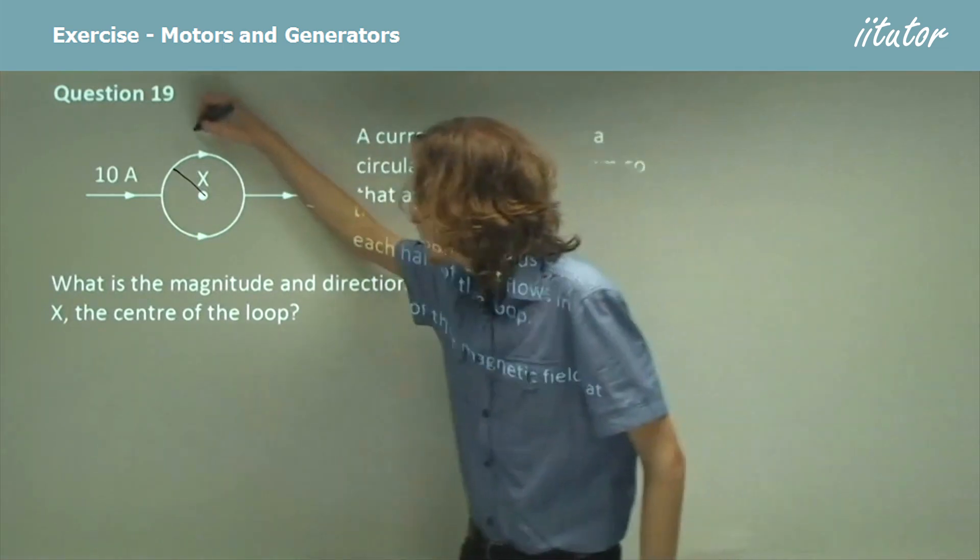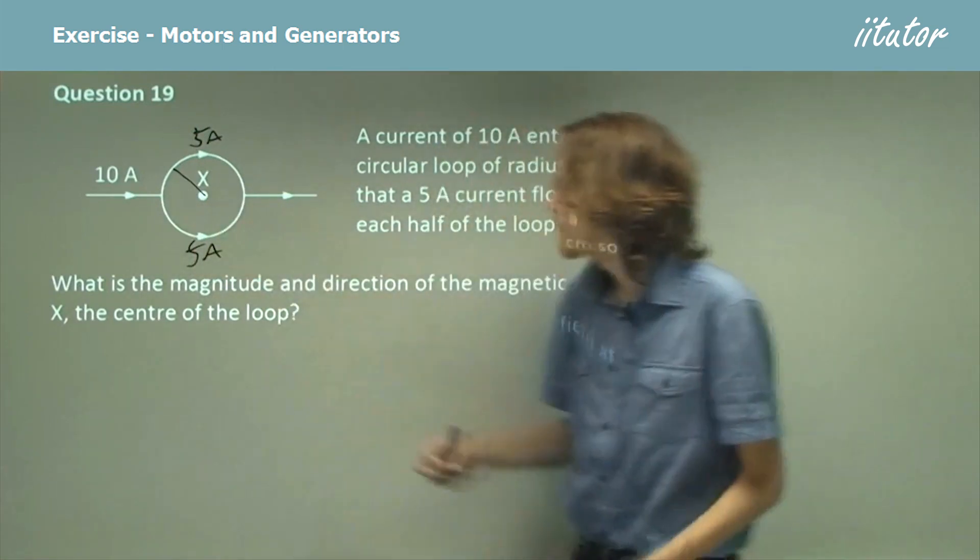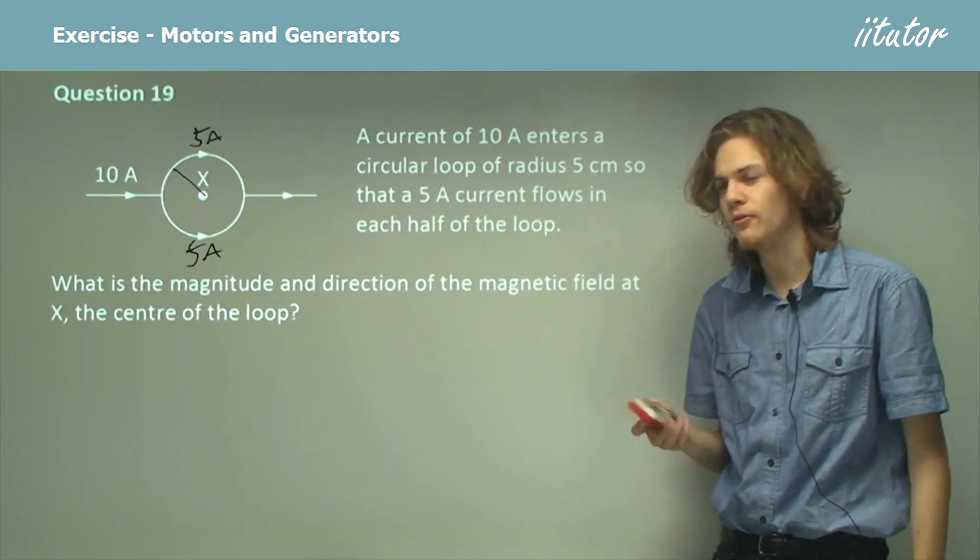Let's put those on. 5 amperes, 5 amperes. What is the magnitude and direction of the magnetic field at x, the center of the loop?